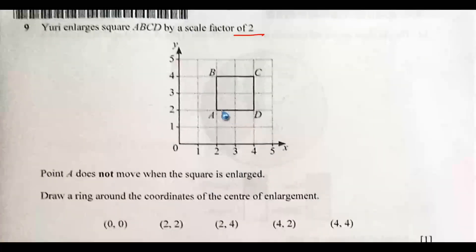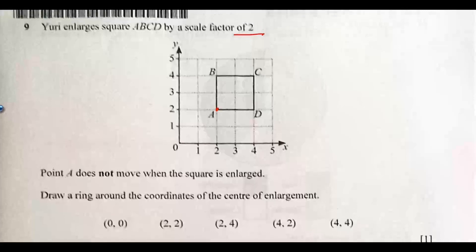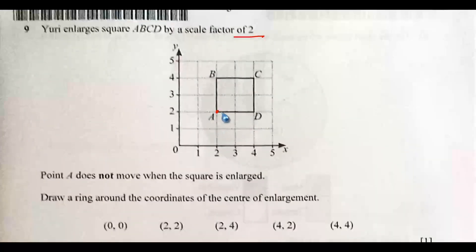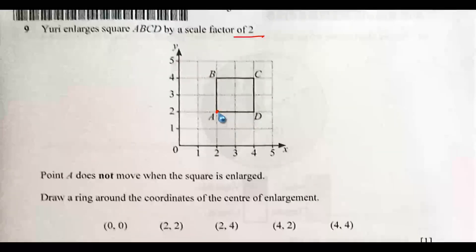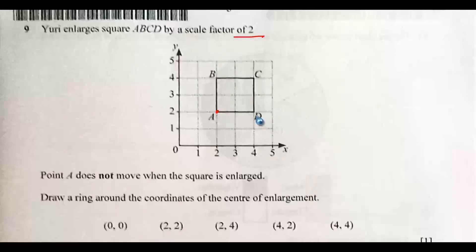Draw a ring around the coordinates of the center of enlargement. For point A not to move at all, the implication is that this is the center of enlargement. So that would be two comma two.